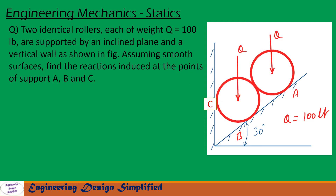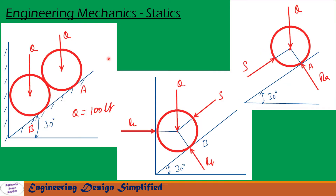Let us see in the coming slides how to solve this problem. Now let us draw free body diagrams for these two rollers. For the first roller, its own weight is acting downwards, reaction at A is acting as shown, and the reaction from the second roller S is acting as shown. For the second roller, weight Q acts downwards, reaction from the first roller acts accordingly, reaction RB acts at support B, and RC acts at support C. This inclination is 30 degrees.